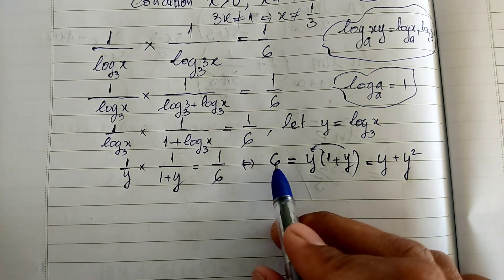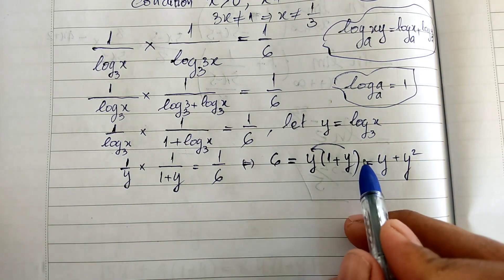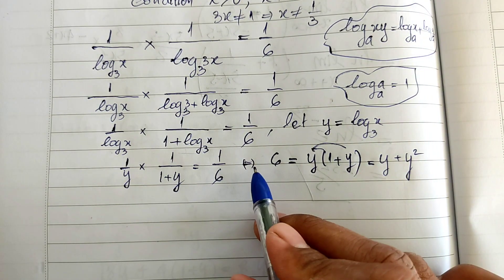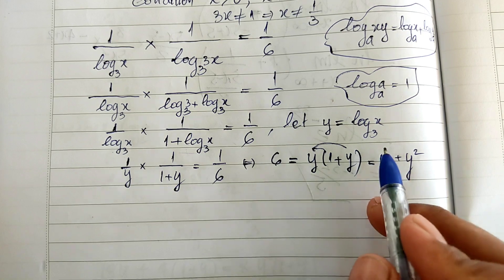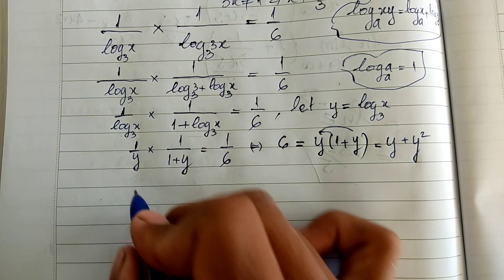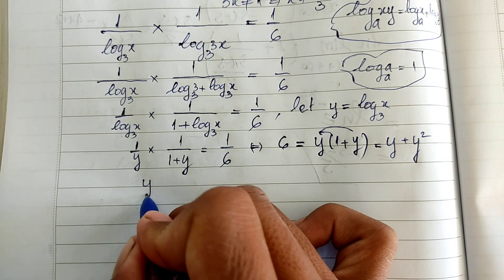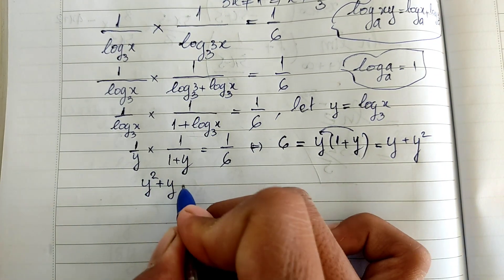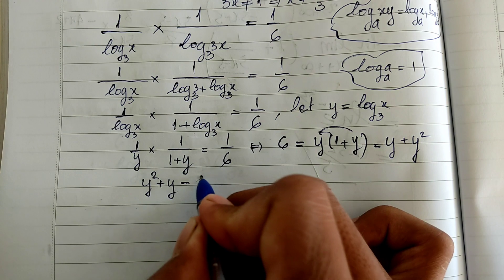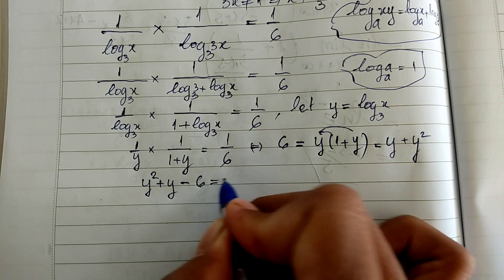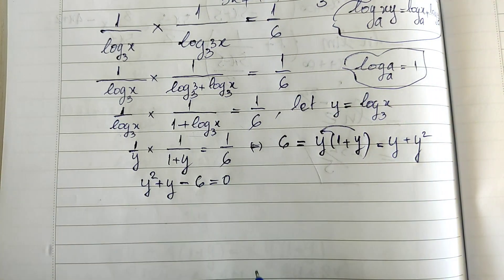I move 6 from the left-hand side to the right-hand side. So I get y squared plus y minus 6 is equal to 0.